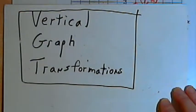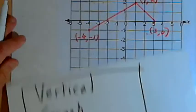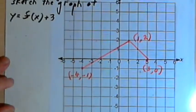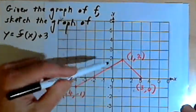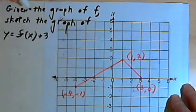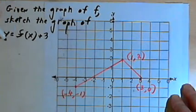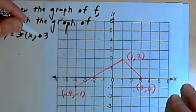This video is provided as supplementary material for courses taught at Howard Community College. In this video I'm going to talk about vertical graph transformations. So let's say you've been given a graph of function f, and you have an assignment that says: given the graph of f, sketch the graph of y equals f plus 3.